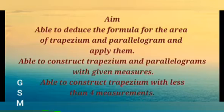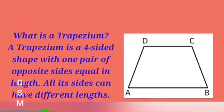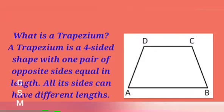First we have to know what is a trapezium. A trapezium is a four-sided shape with one pair of opposite sides parallel. All its sides can have different lengths.